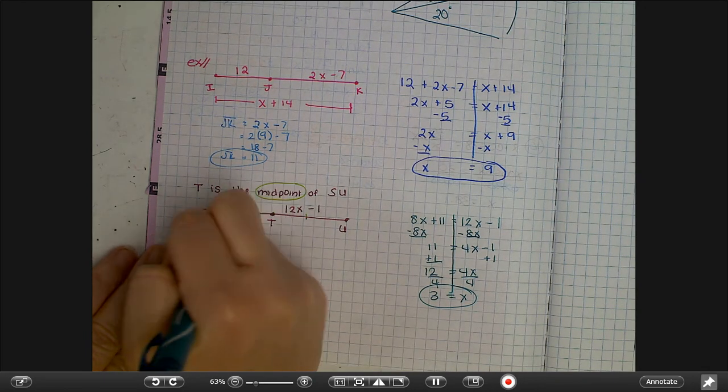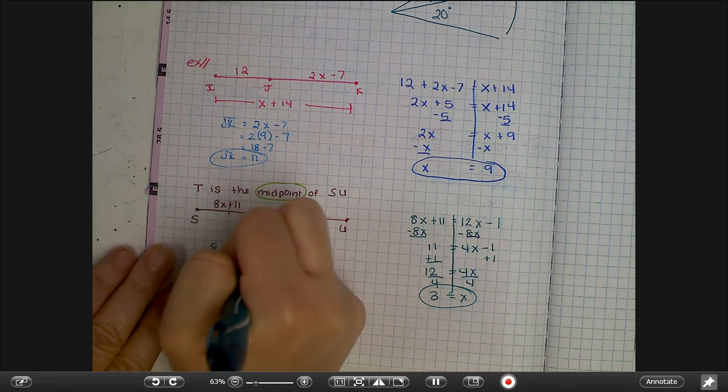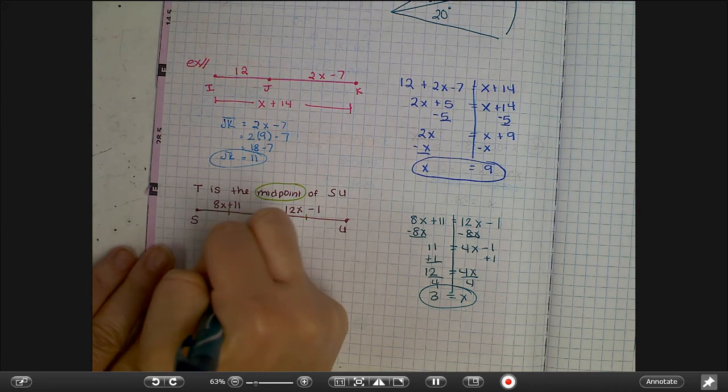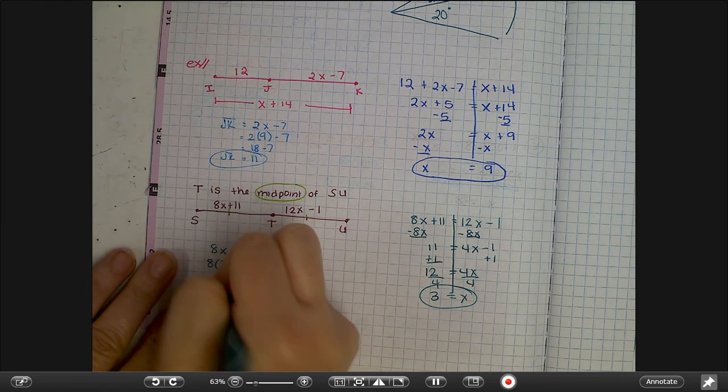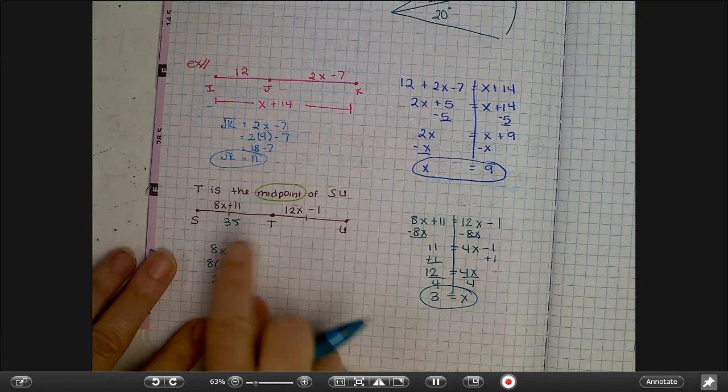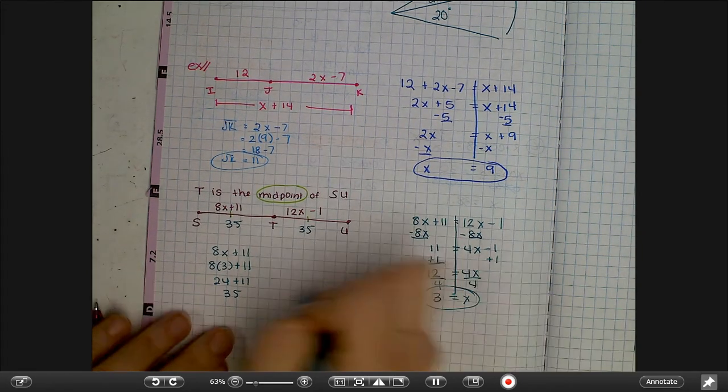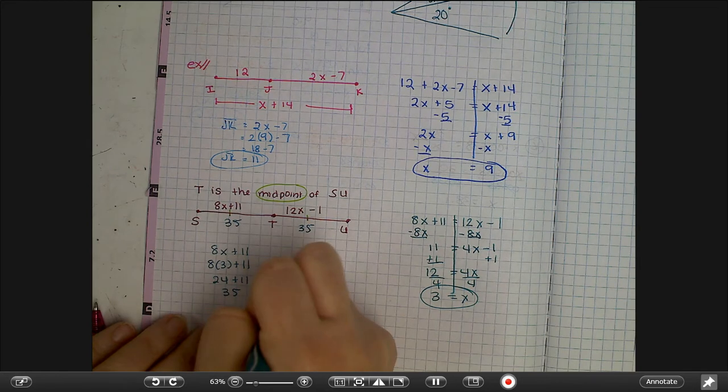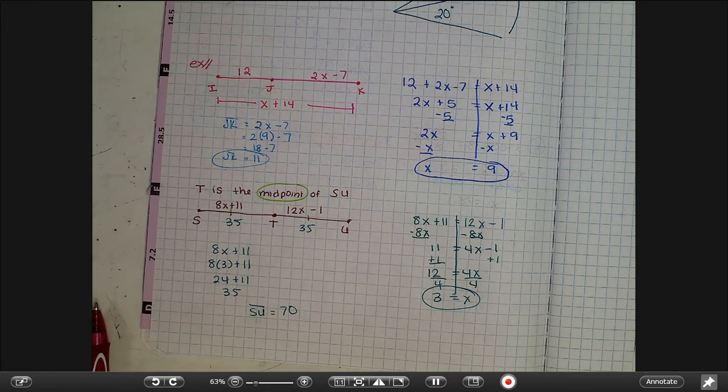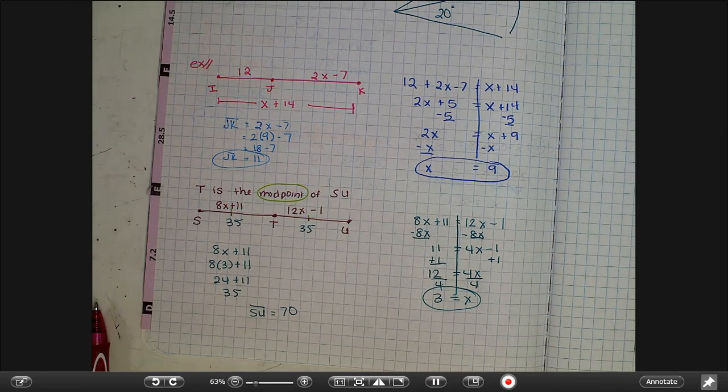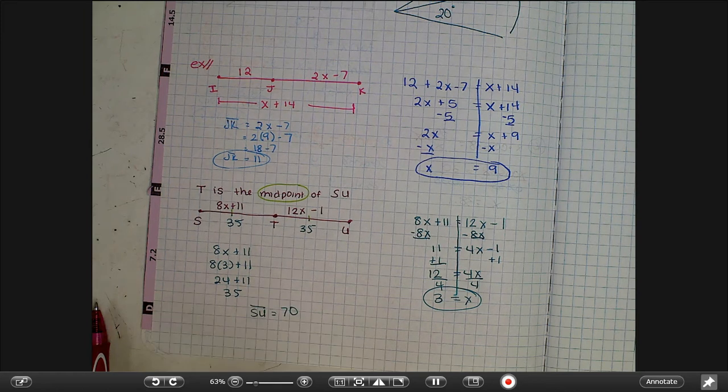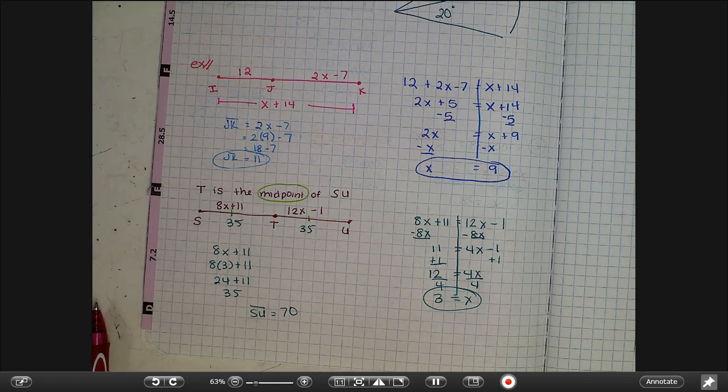And if we want to know maybe the length of the whole line or segment, I'm going to substitute 3 for x. Plus 24 plus 11 is 35, so I know this piece is 35 which means this piece needs to be 35. So our whole segment is 70. So just be sure when you do these problems that you understand what it's looking for. I didn't actually tell you that here but it will be very specific when you have these types of problems.